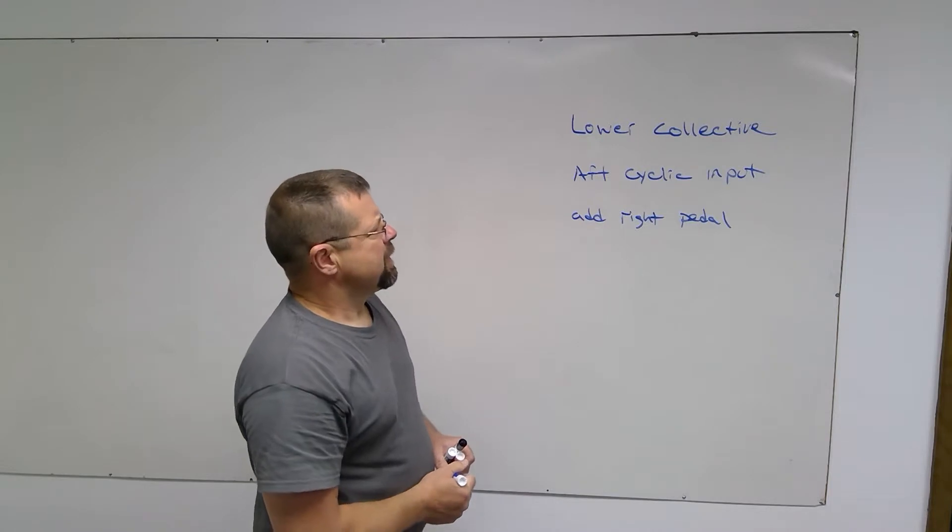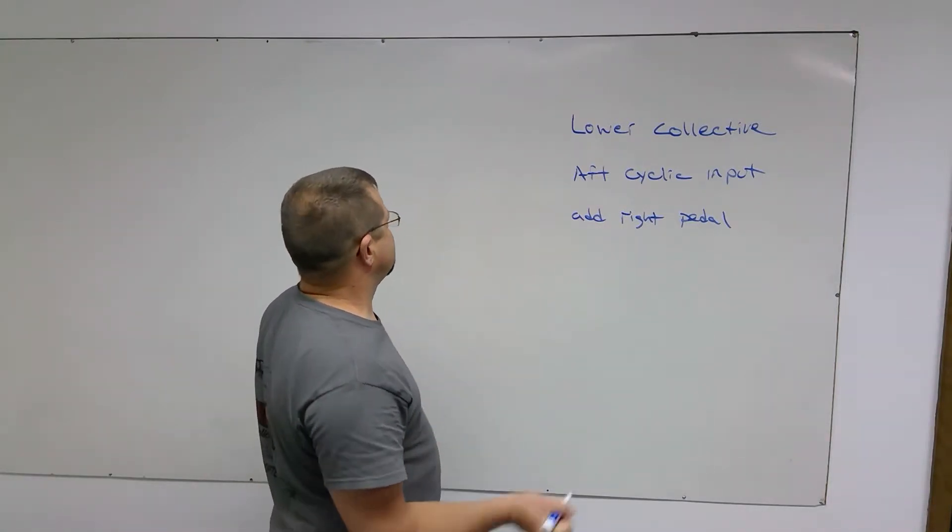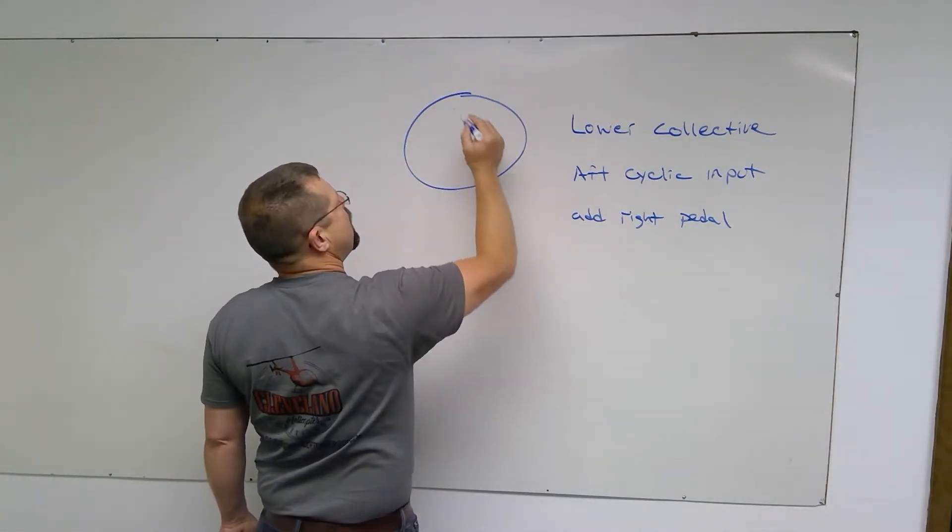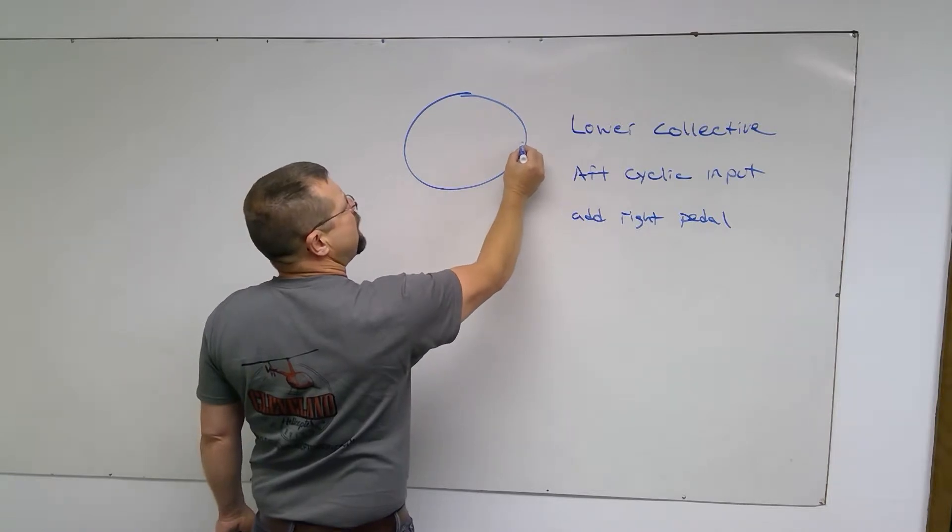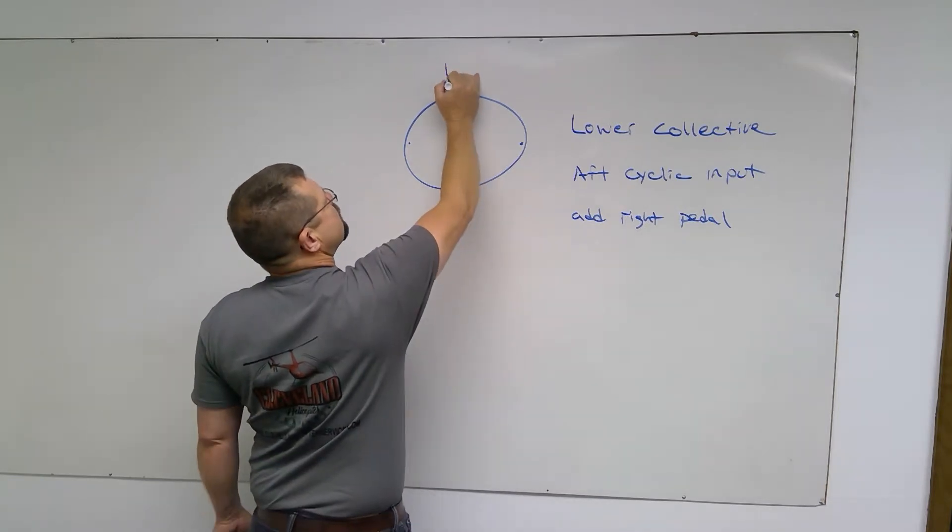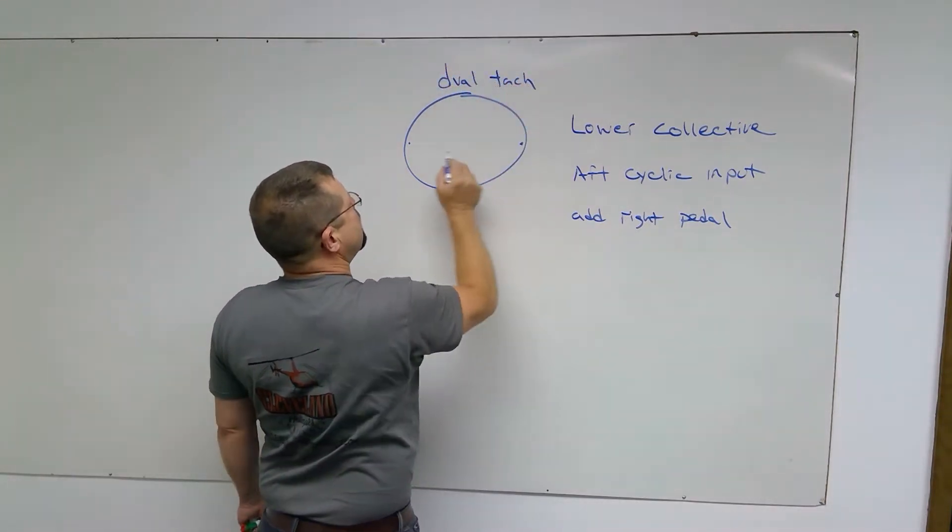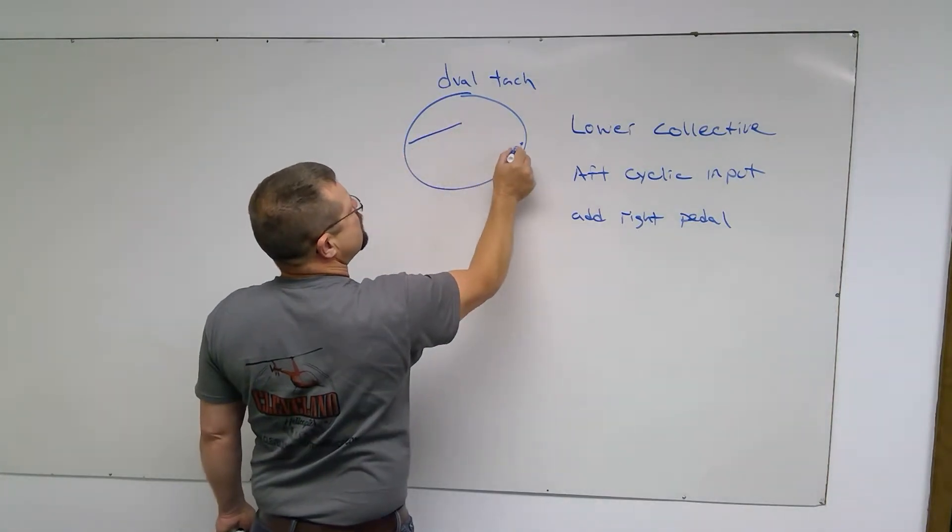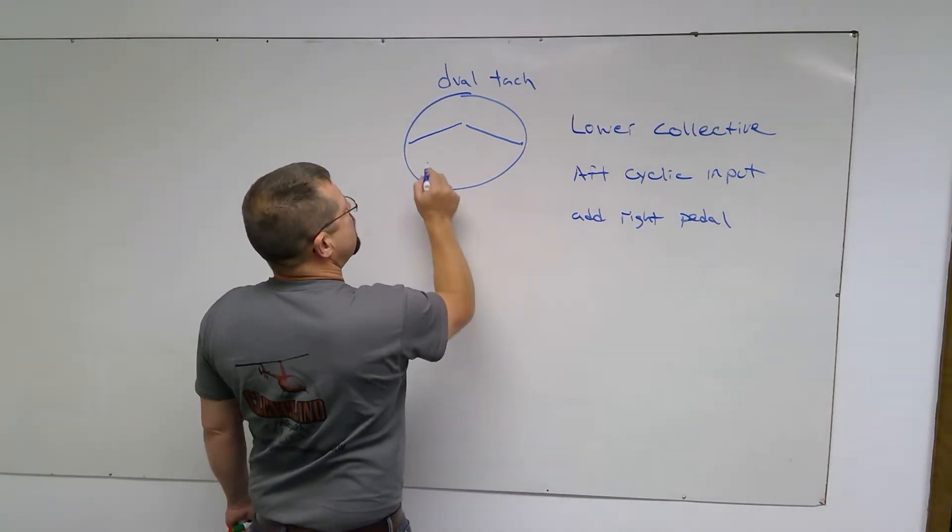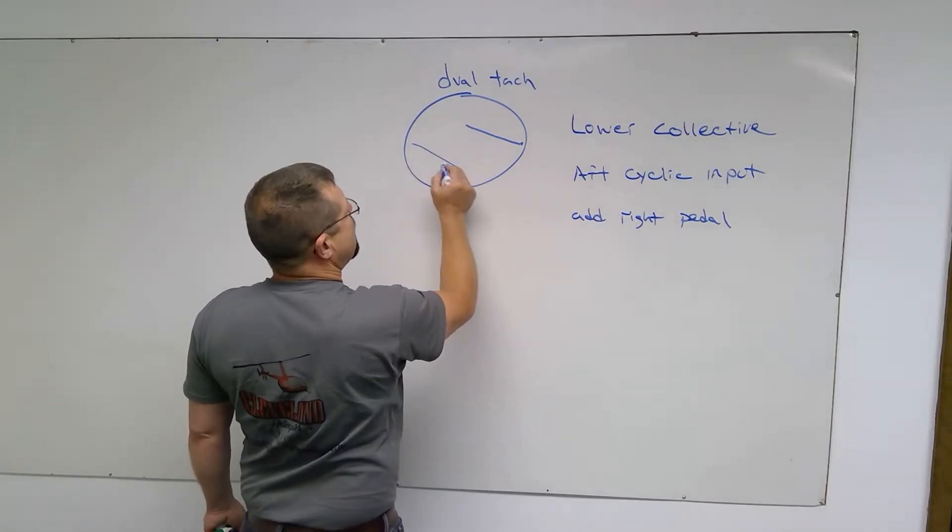Now in the autorotation, the RPM is very critical. If you are operating a Robinson product or a RotorWay product, the needles are going to swing from the left and the right in your dual tach. When you are operating the helicopter under normal conditions, they are going to be joined in the middle. When the helicopter stops running, the engine tach will go to the bottom.